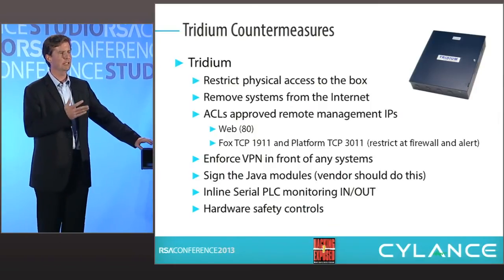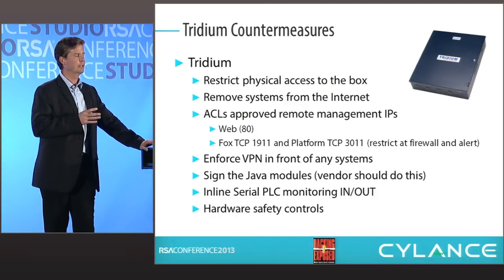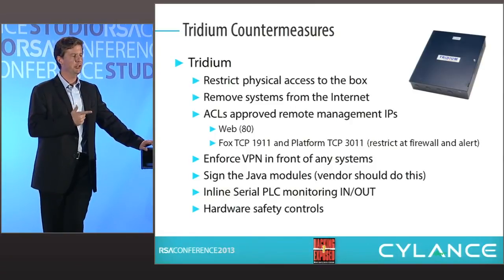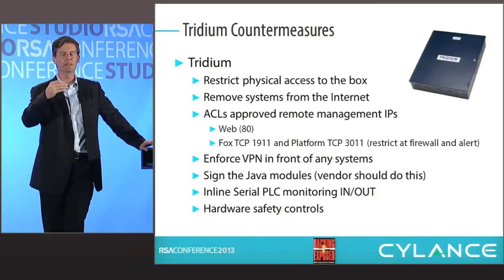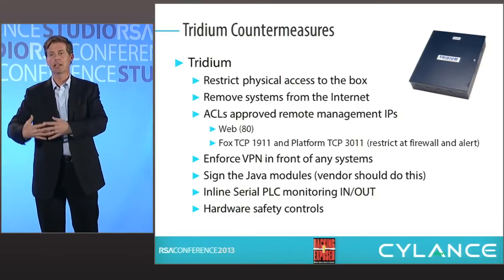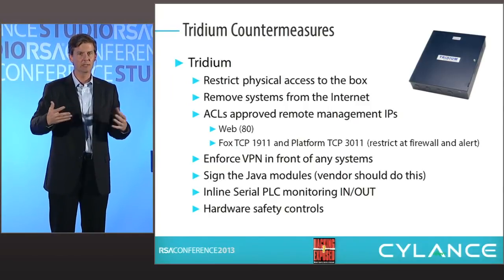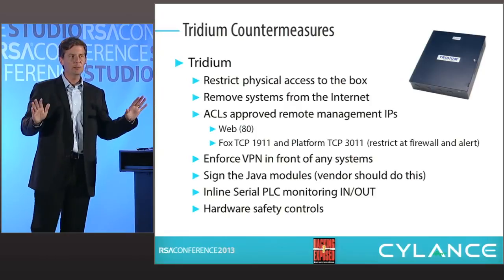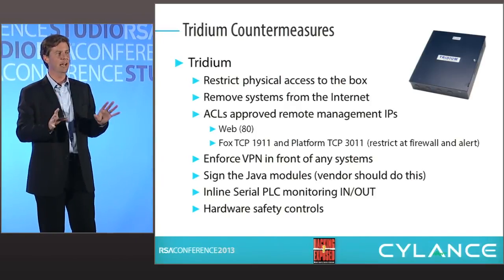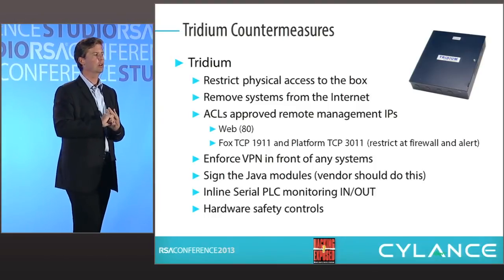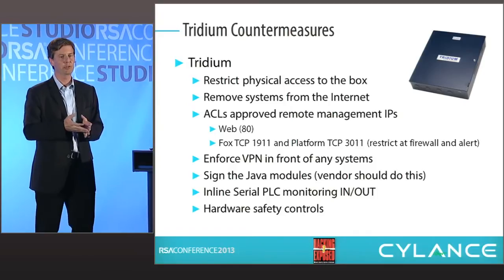Other mitigations: restrict physical access to the box as much as possible, since many attacks can occur physically. Remove all these systems from the internet — if you must expose them, ACL everything going in or put a VPN in front of it. Companies often engage a remote management firm that sets the system up on the internet for access — do not allow that. Control who gains access through a VPN or ACLing at the upstream firewall or router. These are very simple countermeasures.